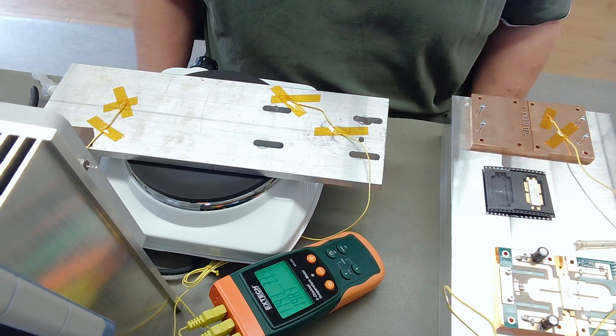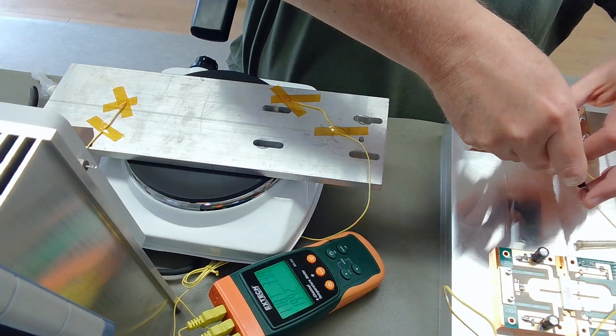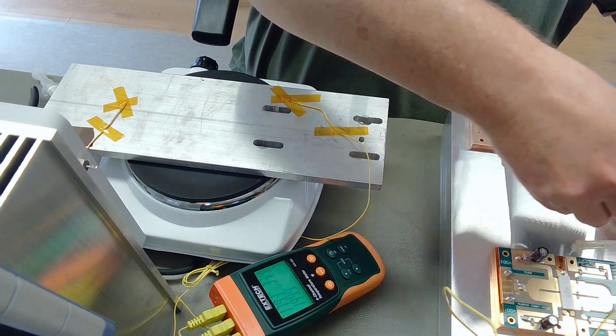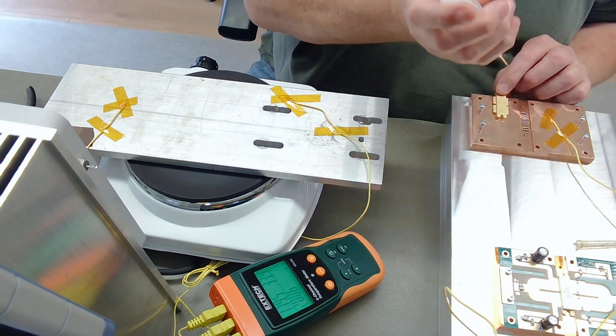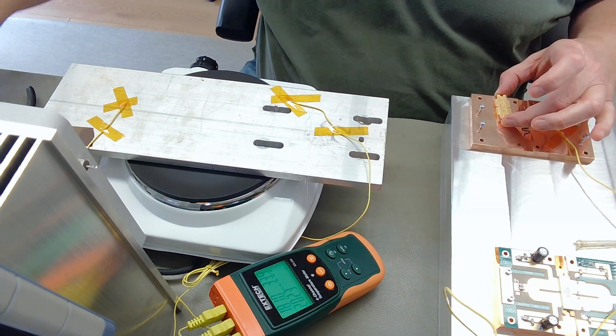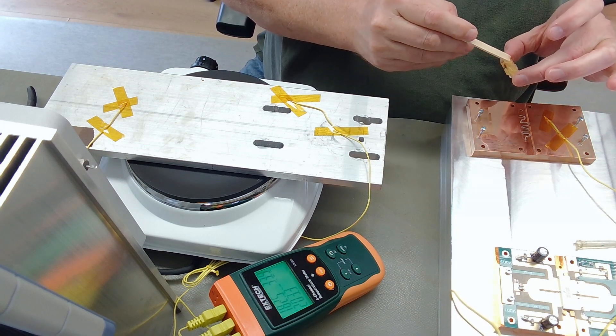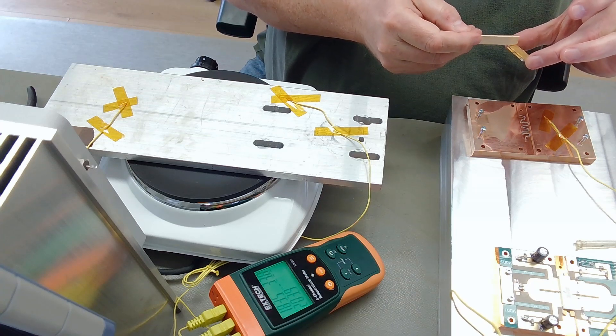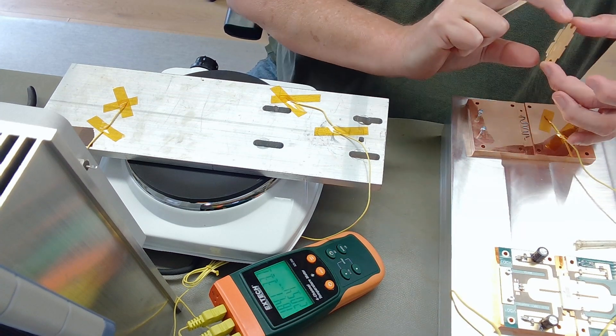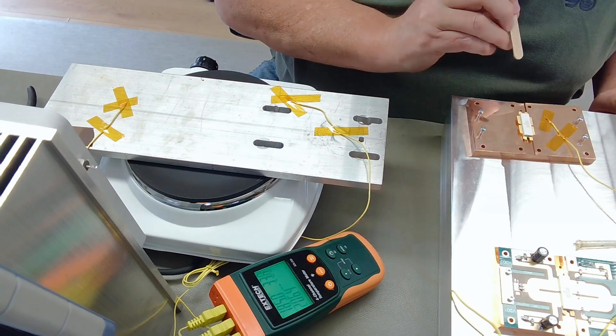Now we are here again, five minutes later, and the aluminum is close to 200 degrees. I will prepare the next LDMOS, again making absolutely sure that we mount it the right way on the copper spreader so that the drain goes to the drain side and the gate goes to the gate side. Put a little bit of flux on the transistor.